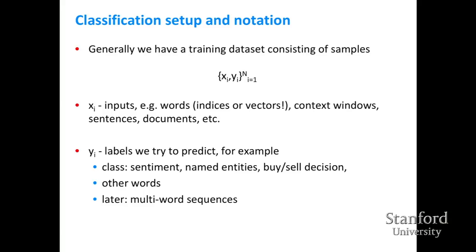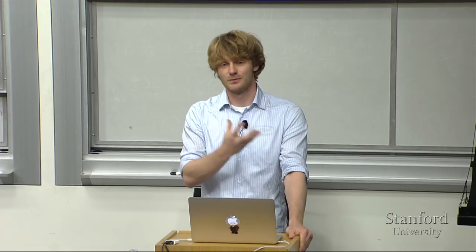Let's be very careful about our notation today, because that's one of the main things people trip up over as we go through complex chain rules. We have a training dataset of some input x and output y. x could be, in the simplest case, words in isolation — just a single word vector. But we'll move to context windows today, and eventually use these building blocks for sentences and documents.